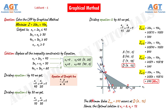This was an example of a unique optimal solution by graphical method for a linear programming problem. In the next lecture, we will look into examples for the other three cases of graphical method: infinite number of optimal solutions, unbounded solution, and no solution. Thank you for watching this video.